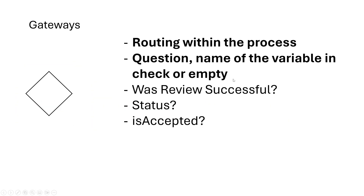Now let's look at gateways. We know events — something that occurs during a process — and activities — something that is performed. Gateways help with routing within the process. The name of a gateway can be a question, the name of a variable, or it can be empty. For example: 'Was the review successful?' — a yes/no question — or a status variable like accepted, rejected, or in progress, or a boolean 'is accepted' with true or false.